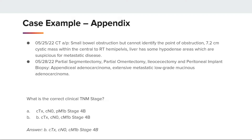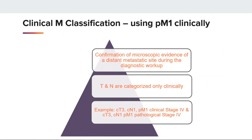The clinical time frame ends when therapy begins. AJCC page 14 notes clinical stage should not be changed based on subsequent information from the pathological examination of resected tissue. AJCC 8th edition clinical M classification on page 17 shows when we can code pM1: microscopic evidence confirmation of a distant metastatic site during the diagnostic workup, where T and M are categorized only clinically. These rules are also the same for path M on page 22.